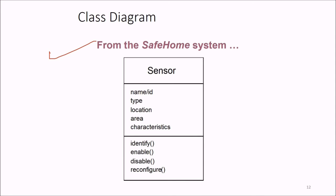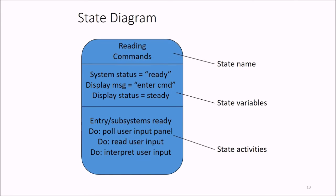For a home system sensor class diagram, data members can be name, type, location, area, and characteristics. Functions we need are identify, enable, disable, and reconfigure. For the state diagram, we have state names like 'reading commands' with variables like system status. The display message is 'enter command' and display status is steady. State activities include: if entry subsystems are ready, we poll the user input panel, read user input, and interpret the user input.